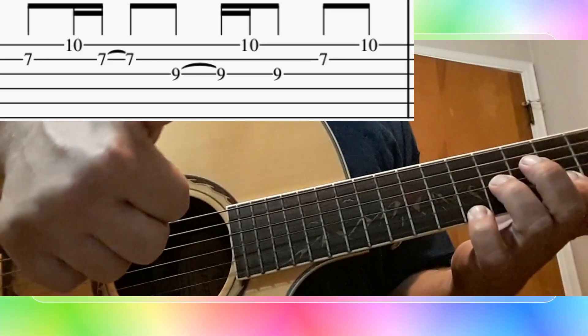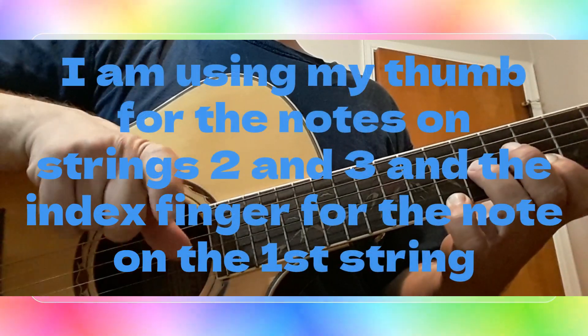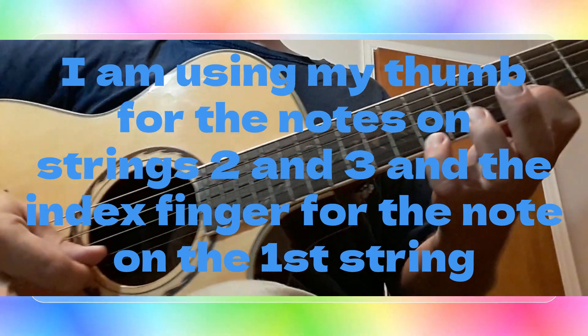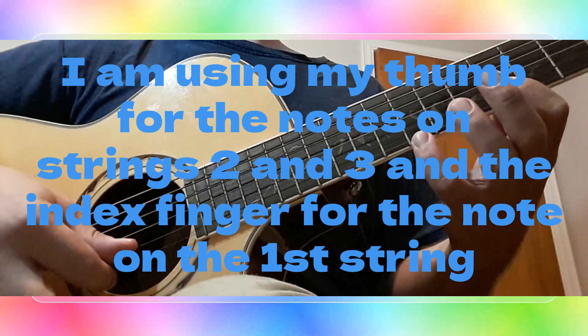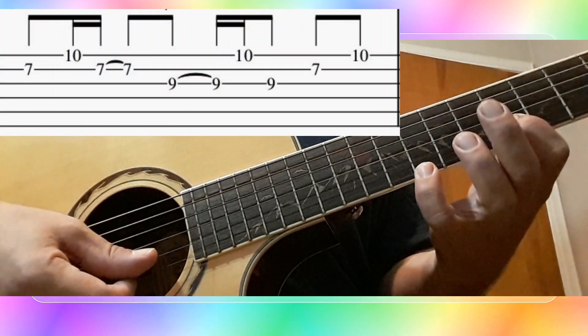Now I want you to notice that the thumb is playing string 2 and 3, and the index finger is playing string 1. So I'm going to count to 4, and I will play measure 1 in slow motion. And if my words are confusing, hopefully the tablature will help you.